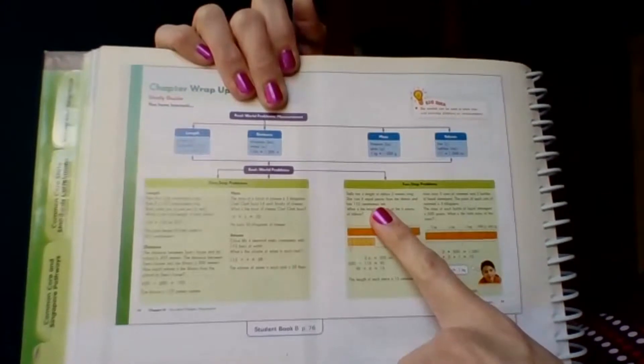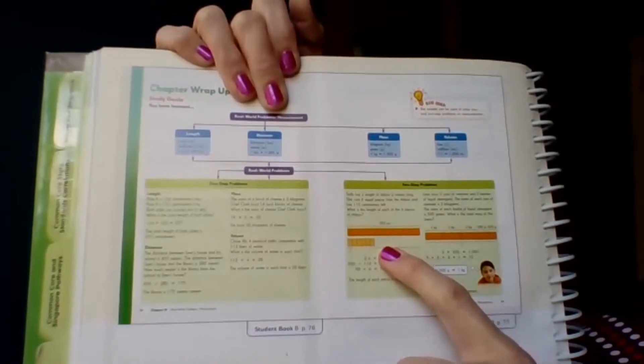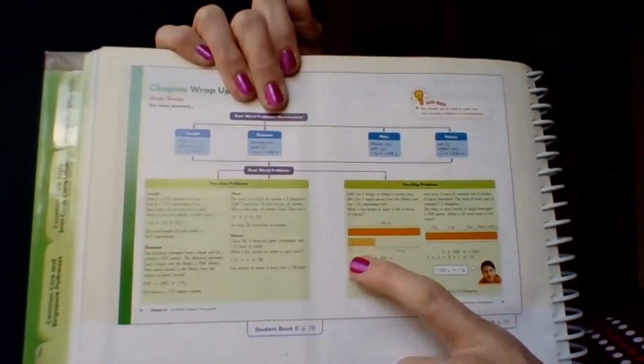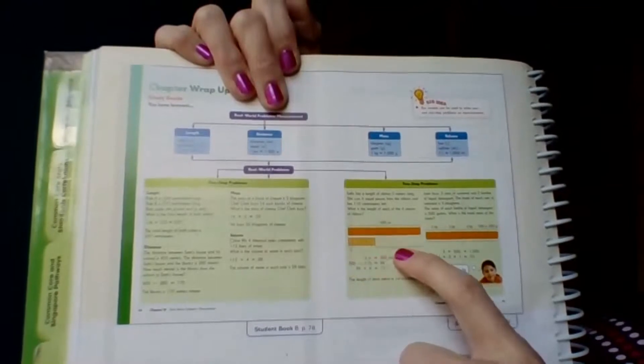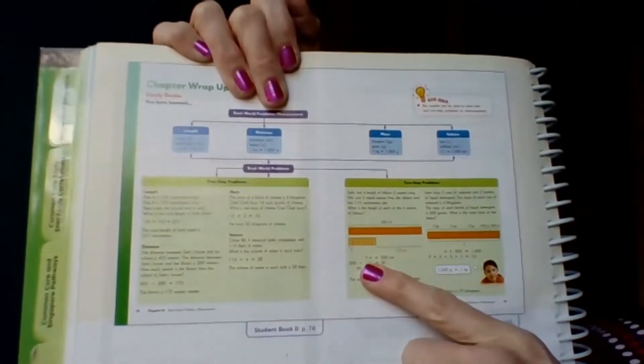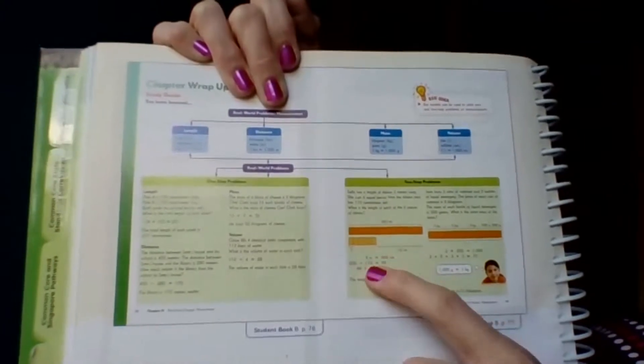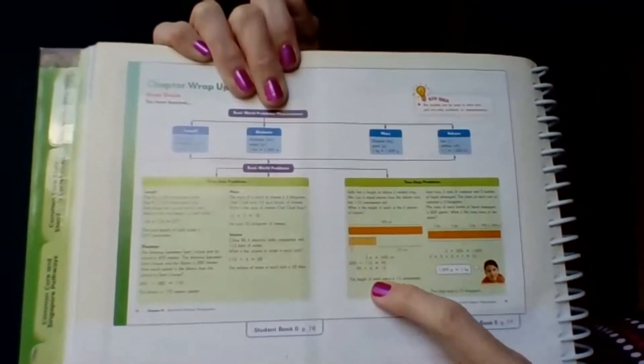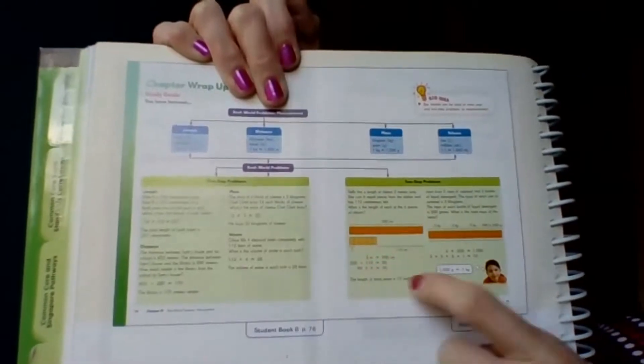Sally has a length of ribbon two meters long, and she cuts six equal pieces from the ribbon and has 110 centimeters left. She's got these six pieces here. Here's the 110 centimeters that's left. What is the length of each of the six pieces? So, two meters equals 200 centimeters. 200 minus 110 equals 90, and 90 divided by the six equals 15. So the length of each piece is 15 centimeters. See, they had to do, first they had to subtract, and then they had to divide.